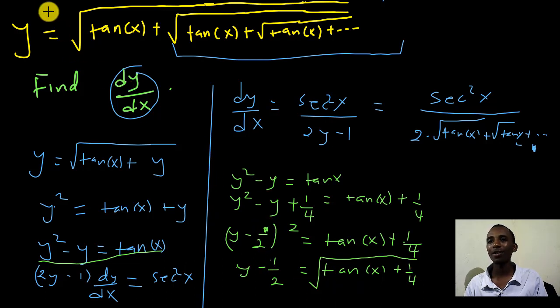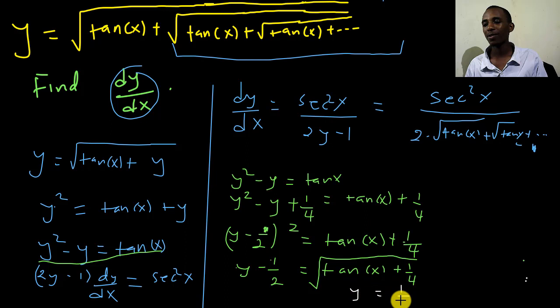So we have y minus a half is equal to the square root of tan x plus a quarter, because that's y squared, y minus a half squared. So we can see that y equals positive a half plus the square root of the tangent, tan of x plus a quarter.